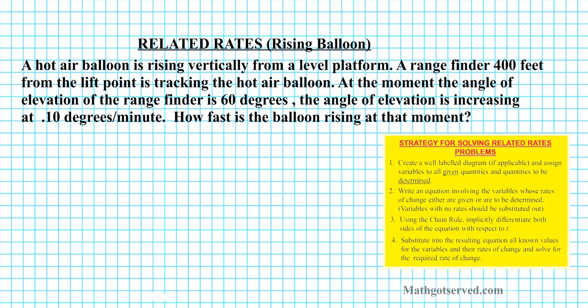Alright, so let's take a look at the question. Notice I have my strategy here on the right corner. This says, a hot air balloon is rising vertically from a level platform. A range finder 400 feet from the lift point is tracking the hot air balloon. Alright, so as indicated in our strategy here, first thing you want to do is create a well labeled diagram. Okay? So let's go ahead and do that. So let's say we have a situation like this.